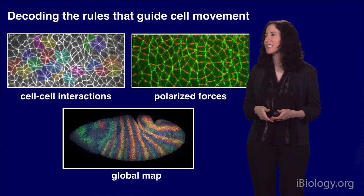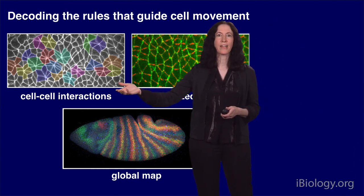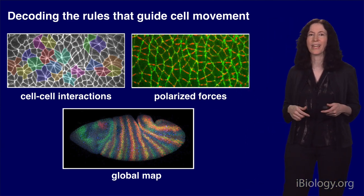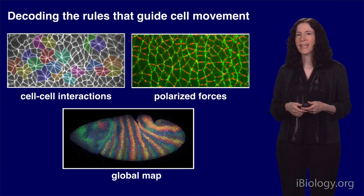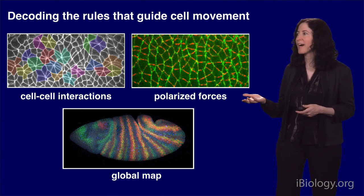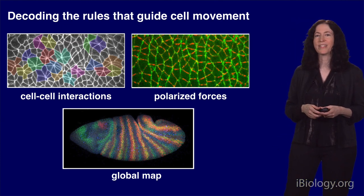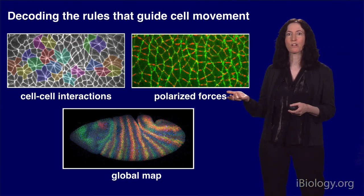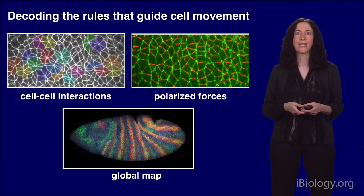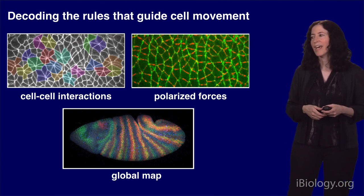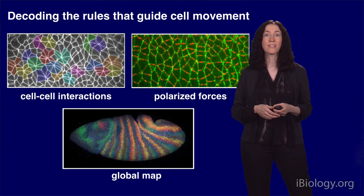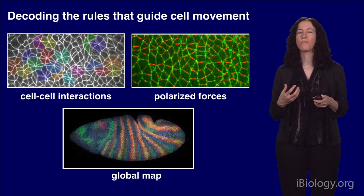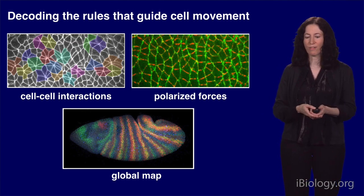We now have a lot of information about the cell interactions during axis elongation as well as the polarized force-generating machinery that drives these cell movements. But if we step back from what's going on inside cells to look at what's happening throughout the entire tissue, a major unanswered question is what orients these polarities across hundreds of cells so that they all move in the same way to promote tissue elongation. This suggests that an additional system remains to be discovered that provides a global map orienting these polarities so that cells all move in the same way to move the head further away from the tail.